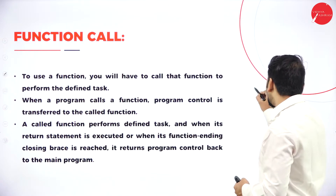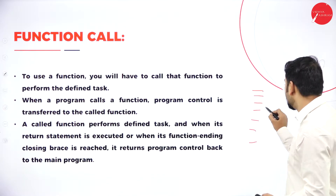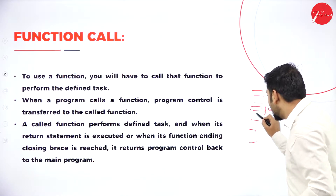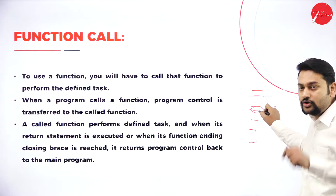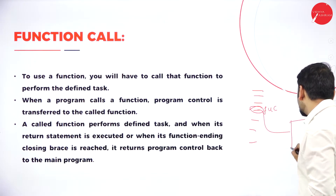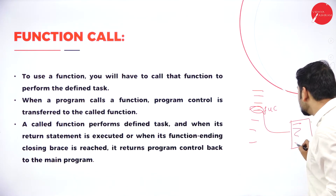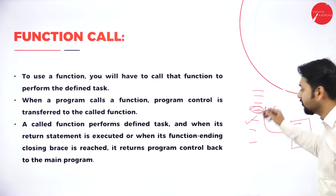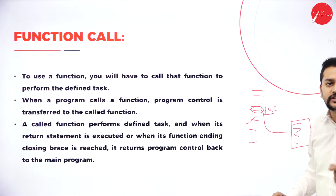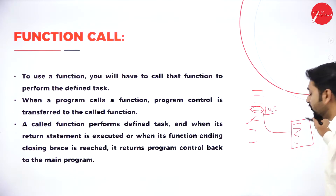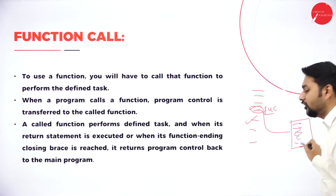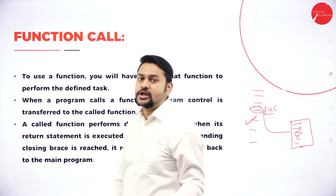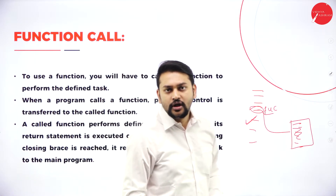Imagine I have a hundred lines in my program. Somewhere in between, I have the function call — just one single line. I am executing all these statements, but when I encounter the function call, automatically the control goes to the function where I have defined it. After executing all the statements in the function, the control comes back to the next statement and resumes execution. That's what you need to understand about how the function call works.